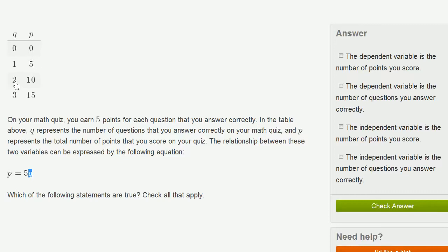Two questions right, 2 times 5 is 10. 3 times 5 is 15. So this all makes sense.